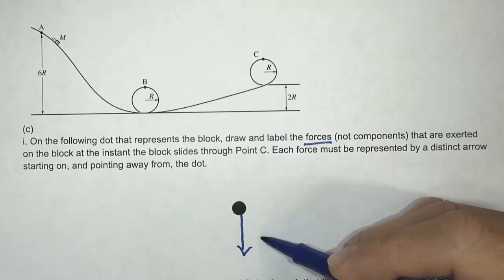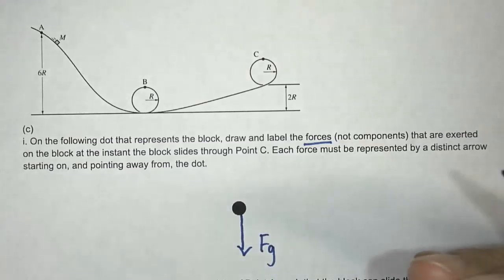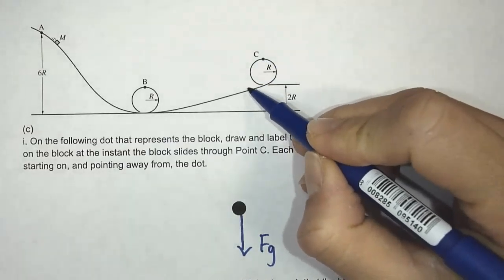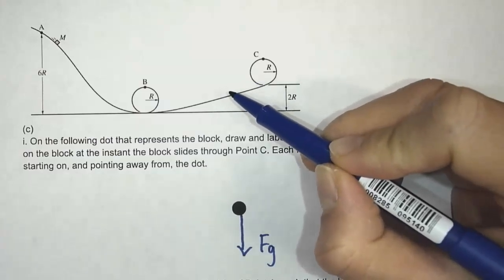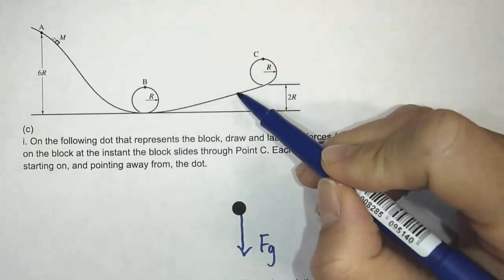So we're going to have gravitational force downward. And we know that because any object on Earth, there's a gravitational force pulling on it. It's going to be downward towards the center of the Earth if you want to be technical, but it's going to be downward. And then there's also a track.